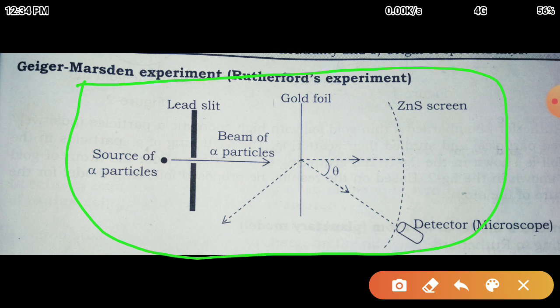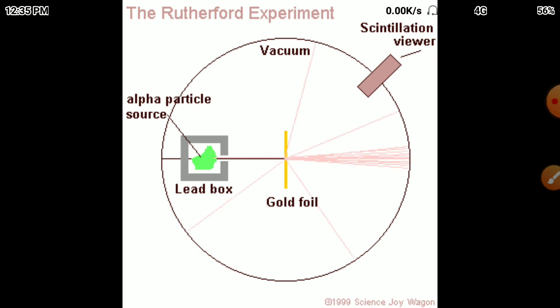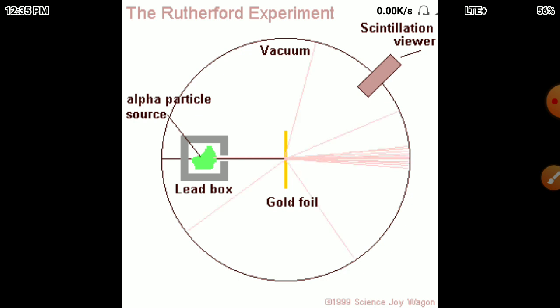Rutherford observed that most of the alpha particles passed straight through the gold foil. Only 0.14% of the incident alpha particles were deflected by more than 1 degree, meaning not even 1% were significantly deflected.